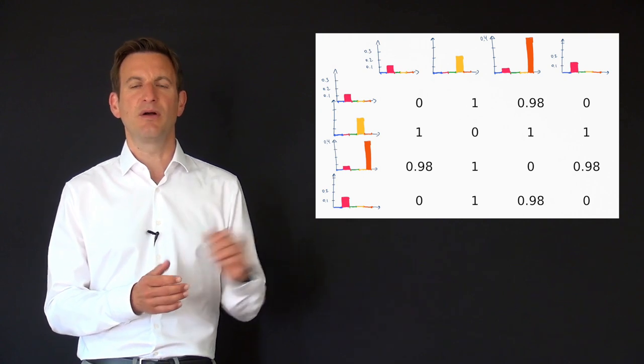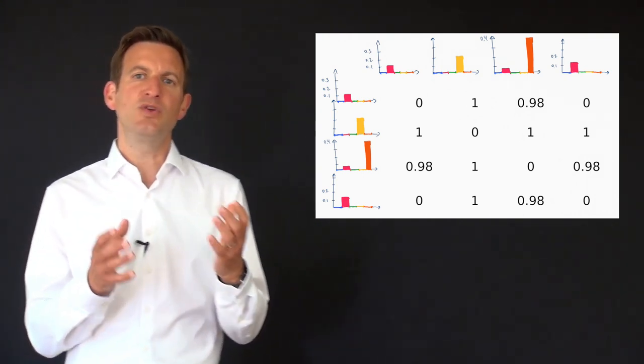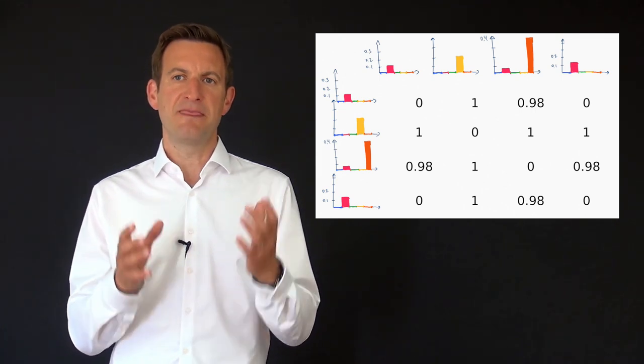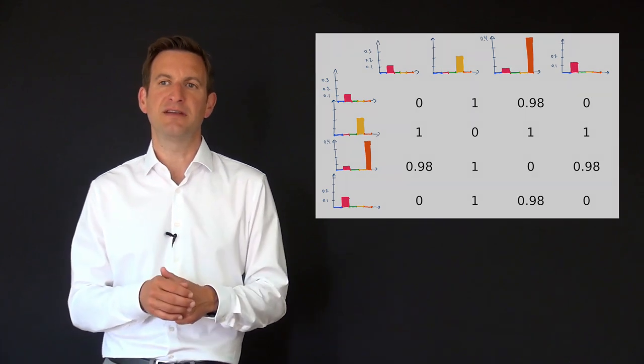Actually not all of them. Here we also see that image number zero and image number three have a distance of zero which means they have the same distribution of reweighted features and thus they are considered to be similar or maybe even identical.